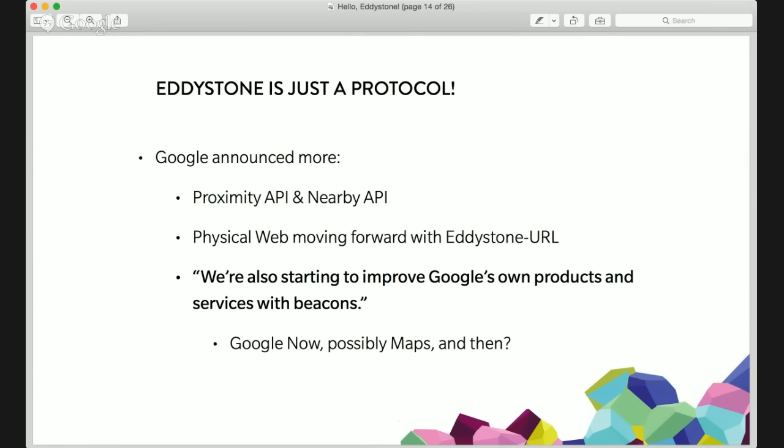Even Google, when they released Eddystone on day one, essentially built a mini SDK available on GitHub that shows how to detect Eddystone beacons using Core Bluetooth and Android APIs. But Google actually announced a few more really exciting things: the Proximity API, the Nearby API, the concept of the Physical Web, and also that Google said they'll start implementing beacons in their own services as well.